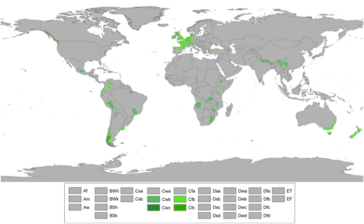CFB climates are predominant in central parts of Western Europe, including Northern Spain, Belgium, Britain, France, Ireland, and the Netherlands. They are the main climate type in New Zealand and the Australian states of Tasmania, Victoria, and southeastern New South Wales. In North America, they are found mainly in Washington State, Oregon, Vancouver Island and neighboring parts of British Columbia, as well as many coastal areas of southwest Alaska. There are pockets of CFB in most South American countries, including many parts of southern Chile and parts of the provinces of Chubut, Santa Cruz, and Buenos Aires in Argentina. In Western Asia, small pockets are found close to sea level on the Black Sea coast of northern Turkey and Georgia.